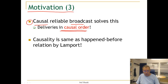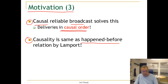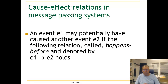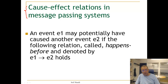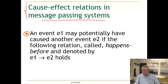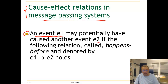We have looked at causality before with the notion of the happened-before relation by Lamport, so we are going to revisit this now. We'll talk about the causal effect relation between messages broadcast in a message-passing system. The original happened-before relation was defined as follows: an event E1 may potentially have caused another event E2 if the following relation holds, called happened-before, denoted E1 happens before E2.